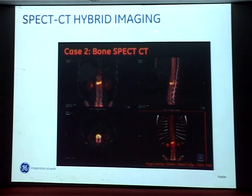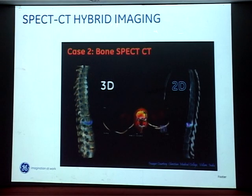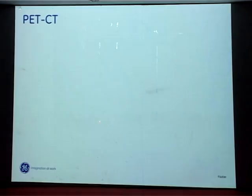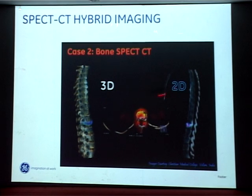Here a patient has a compression collapse of a vertebra, which is very nicely delineated on a whole-body CT study. This is actually from the latest machine installed in the hospital medical college. We can see that 3D as well as 4D images are available.